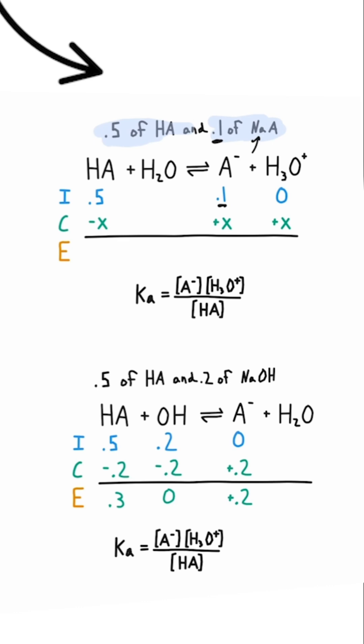If you ever have an ICE table that has a weak acid and its conjugate base present on your initial stage of the ICE table, you need to stop immediately and do the Henderson-Hasselbalch.